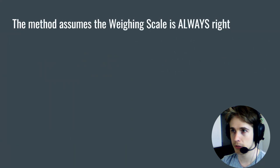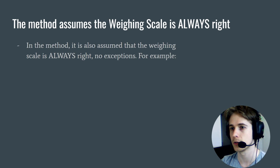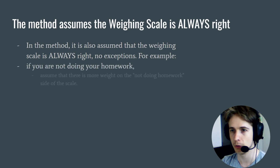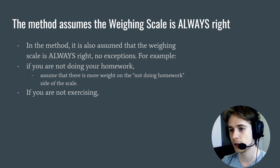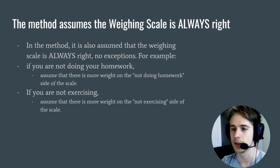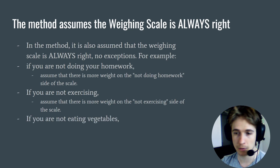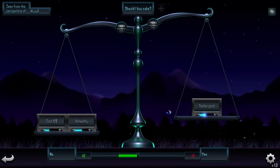The method also assumes that the weighing scale is always right — no exceptions. For example, if you are not doing your homework, assume that there is more weight on the not-doing-homework side of the scale. If you are not exercising, assume there is more weight on the not-exercising side. And if you are not eating the vegetables, assume there is more weight on the not-eating-vegetables side of the scale.